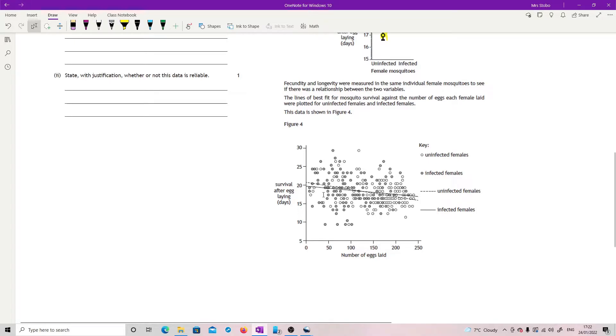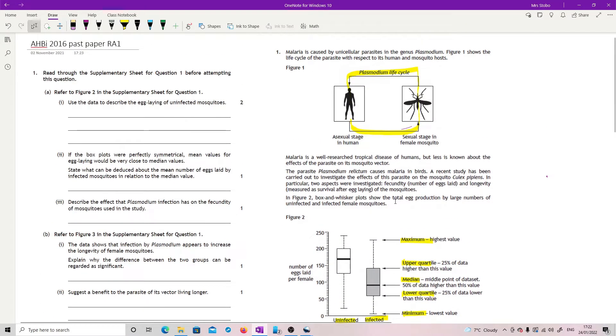So our infected females is our solid line and our uninfected is the dotted. There's a lot of data points in there though. Right, go back up now and actually start the questions.